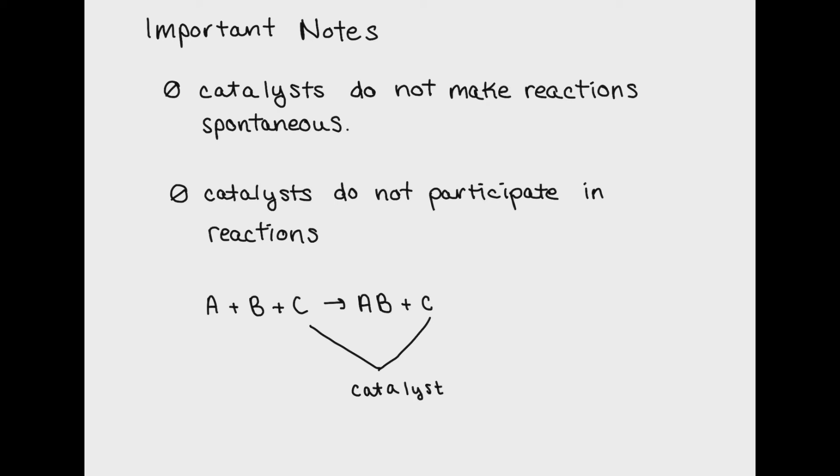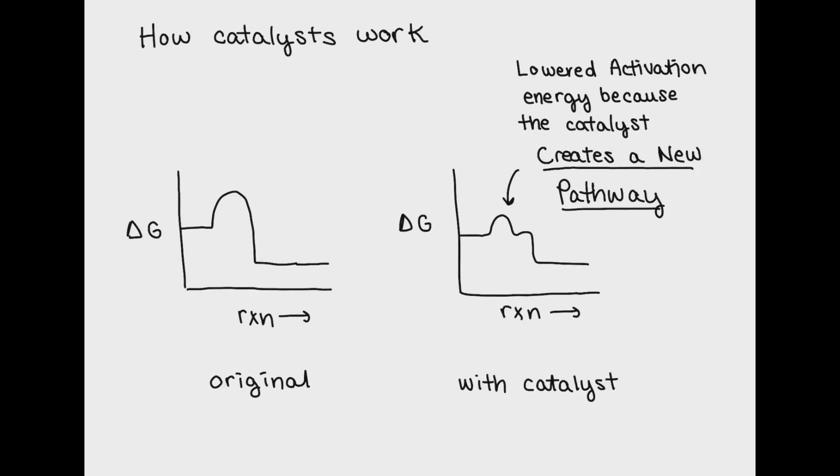Now let's talk about how a catalyst actually does the lowering of the activation energy. A catalyst lowers the activation energy of a reaction by creating a new pathway. This could mean that the catalyst creates new reaction steps, which would be like splitting one big step that requires a lot of energy into two little steps that require less energy.